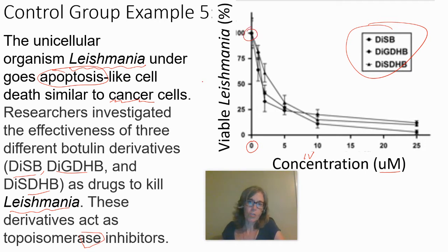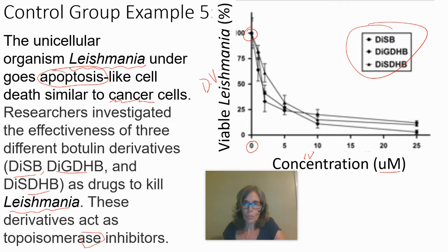The dependent variable is the viability of Leishmania — viable means alive, inviable means dead. The concentrations shown are roughly one micromolar, two and a half, five, ten micromolar, and so on. The test tube with no drug shows that all cells are viable.